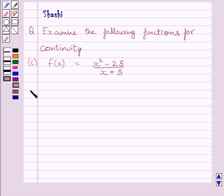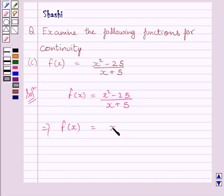Let us now start the solution. We are given f(x) is equal to x square minus 25 upon x plus 5. Now, this implies f(x) is equal to x square minus 5 square upon x plus 5.